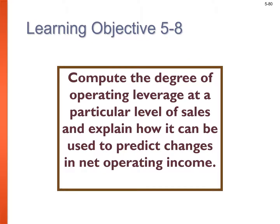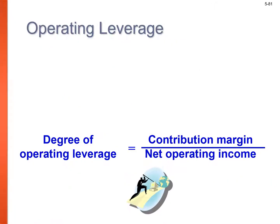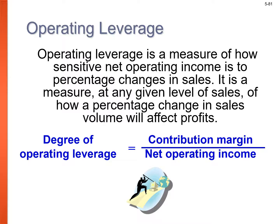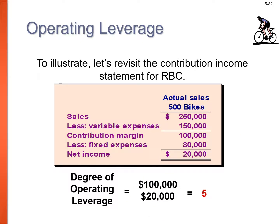The final learning objective: computing the degree of operating leverage at a particular level of sales, and explaining how it can be used to predict changes in net operating income. Operating leverage measures how sensitive net operating income is to percentage changes in sales. The degree of operating leverage = contribution margin ÷ net operating income. For RBC: $100,000 ÷ $20,000 = 5.